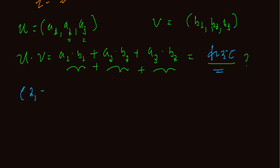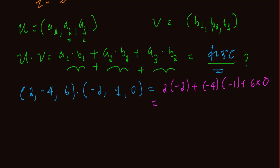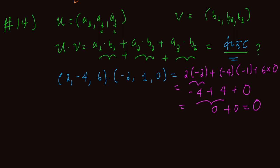So vector (2, -4, 6) dot (-2, -1, 0) equals: two times minus two, plus minus four times minus one, plus six times zero. That is minus four, plus four, plus zero, which equals zero. This means the two vectors are perpendicular. Our answer is choice B.